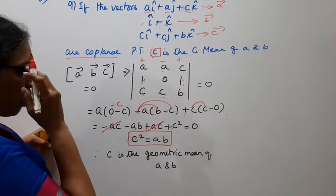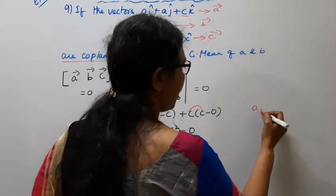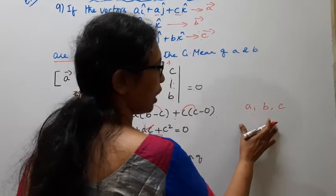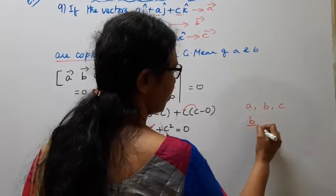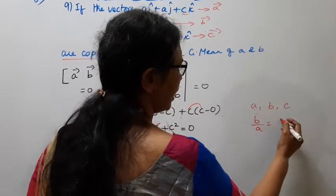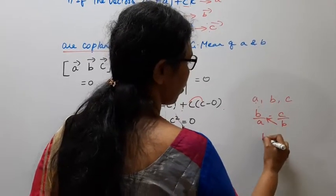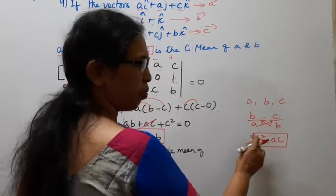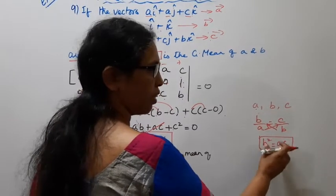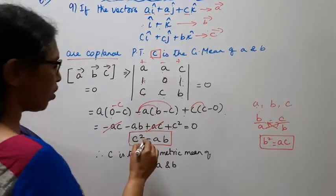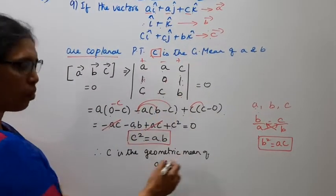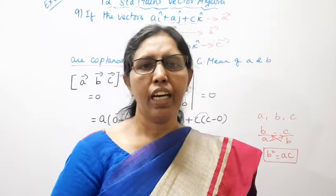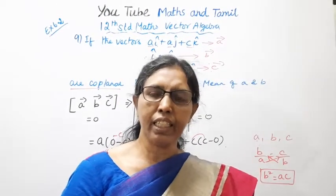Therefore c is the geometric mean of a and b. For a geometric mean, the second term divided by the first term equals the third term divided by the second term — b divided by a equals c divided by b — cross multiplying gives b squared equals ac, confirming that c is the geometric mean of a and b.